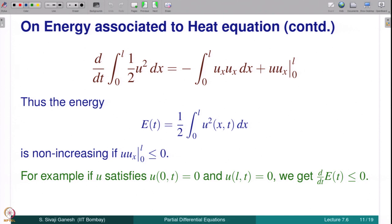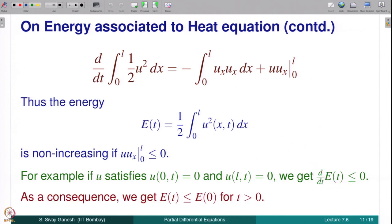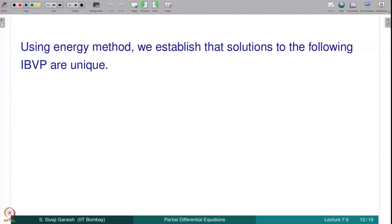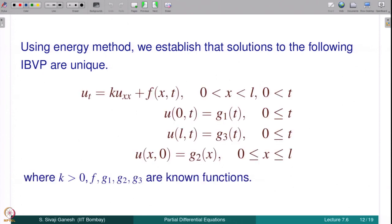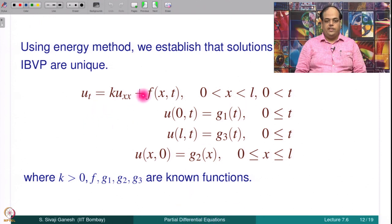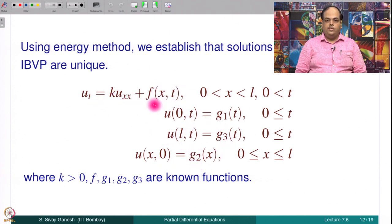For example, if u satisfies u(0,t) = 0 and u(L,t) = 0 — the kind of boundary conditions in our initial boundary value problem — then the boundary term is zero, so d/dt E(t) ≤ 0 and hence E(t) ≤ E(0) for t > 0. Using the energy method we establish that solutions to the following IBVP are unique: u_t = u_xx + f(x,t) for x in (0,L) and t > 0, with boundary conditions u(0,t) = g₁(t), u(L,t) = g₃(t), and initial condition u(x,0) = g₂(x). This is the IBVP for the non-homogeneous heat equation with k = 1, where f, g₁, g₂, g₃ are known functions.